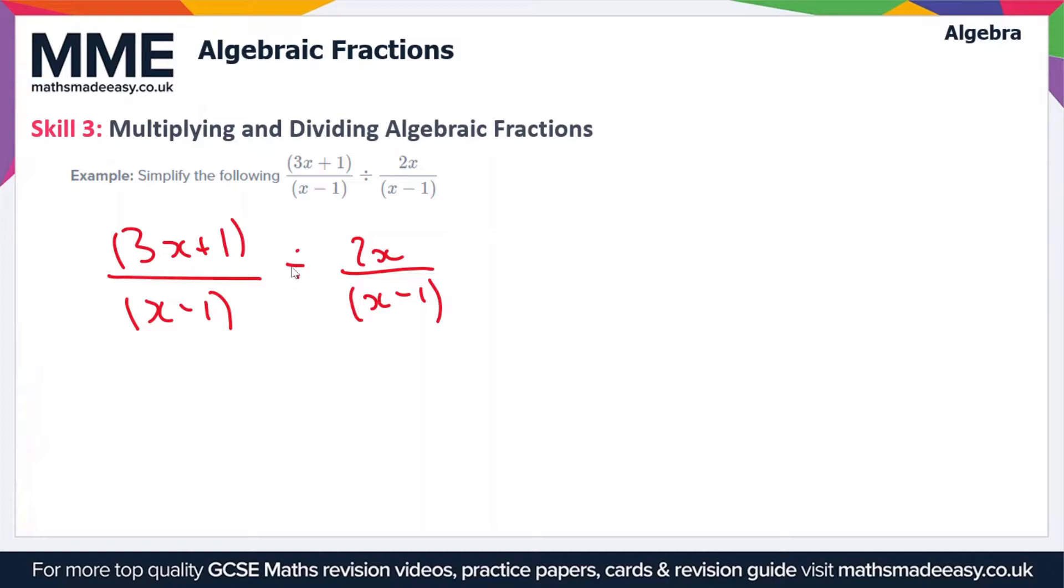that you change the division sign into a multiplication sign and then you flip the second fraction. So this looks like (3x + 1) / (x - 1), let's keep the brackets in there, and then we're multiplying this by (x - 1) / 2x. So let's rewrite this fraction in a slightly different form.